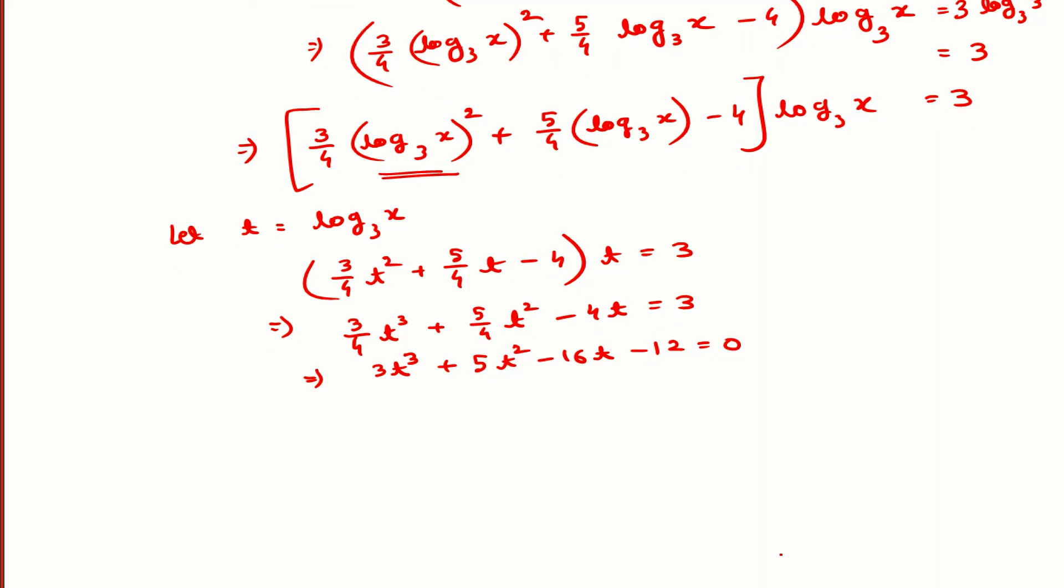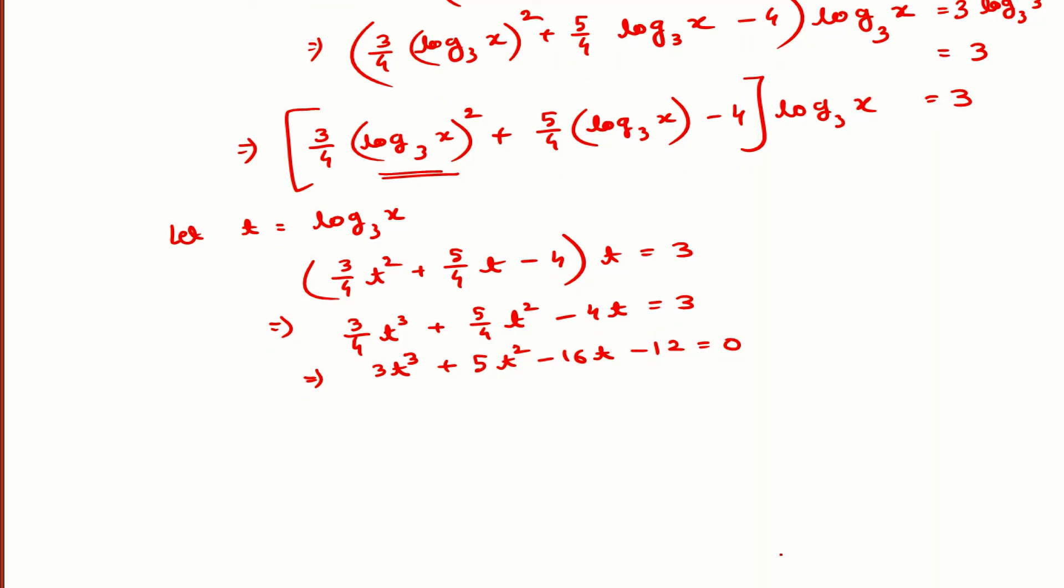If we use trial and error method, or hit and trial method—if we put t equals 2 in this polynomial, you will get 0. So t equals 2 will be a root.